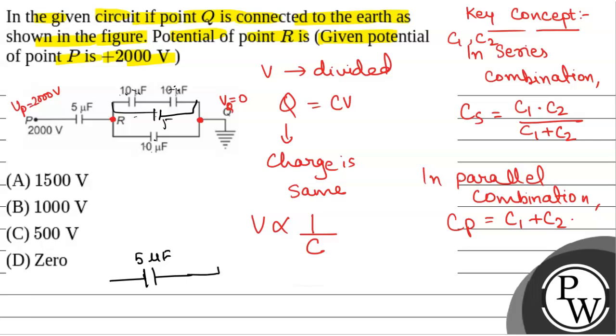So 5 and 10 in parallel, that will be 15 microfarad. So this is 15 microfarad.